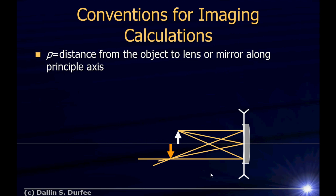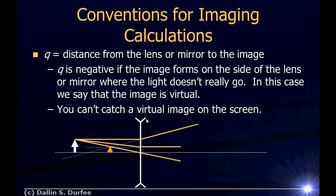Here is what a real image looks like on a mirror. For a lens, the light naturally passes through. For a mirror, the light reflects. So if the image forms over here where the light actually reflects, Q is positive and the mirror has made a real image. Positive Q means the image is on the side of the optic where the light actually goes, and positive Q means you have a real image.